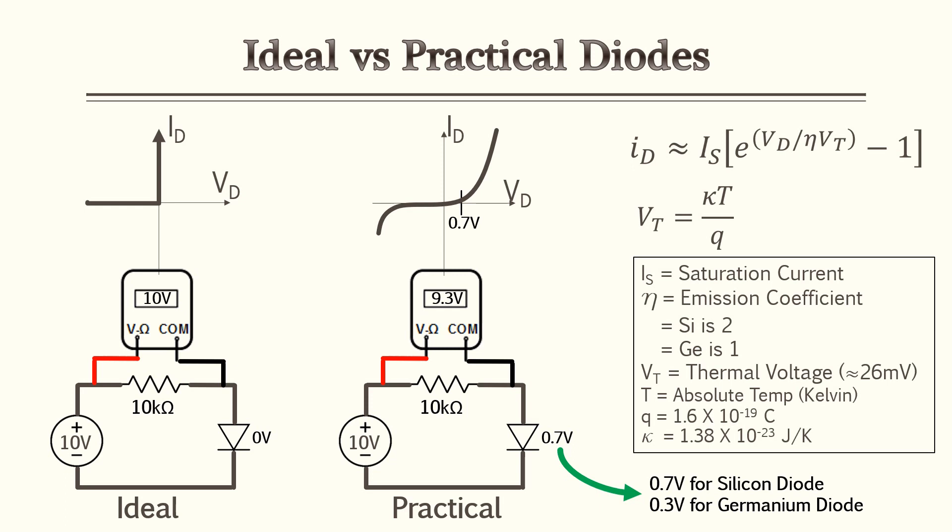For silicon it's 0.7 V and for germanium it's 0.3 V. There are also two equations related to thermal voltage and current, but we won't go into those too much for this lesson — we'll practice those in a few other diode lessons later on.